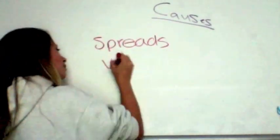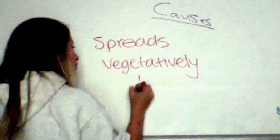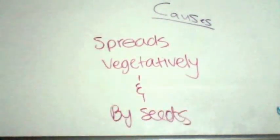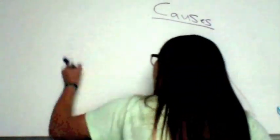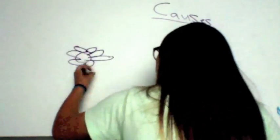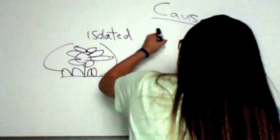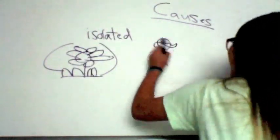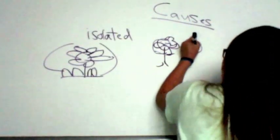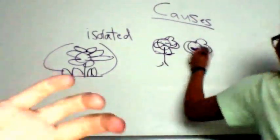So ice plant spreads vegetatively and by seeds, which makes it really easily spread. As you can see from my very bad image, it can grow even though it's isolated from its parent plant. You can see it's grown away from its mustache father and its mother right there.